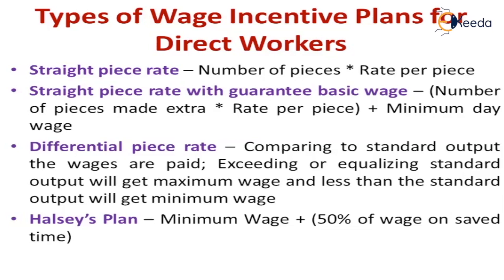The second type is straight piece rate with guaranteed basic wage. The same calculation applies, but in addition to the basic wage, the extra product made is multiplied by the cost — so it is basic wage plus product into cost. The third is differential piece rate: there will be a standard wage for a standard output. If he has crossed that standard, he will get the maximum wage; if he is below the standard, there is a minimum wage. So based on the level of performance, the wage is divided.